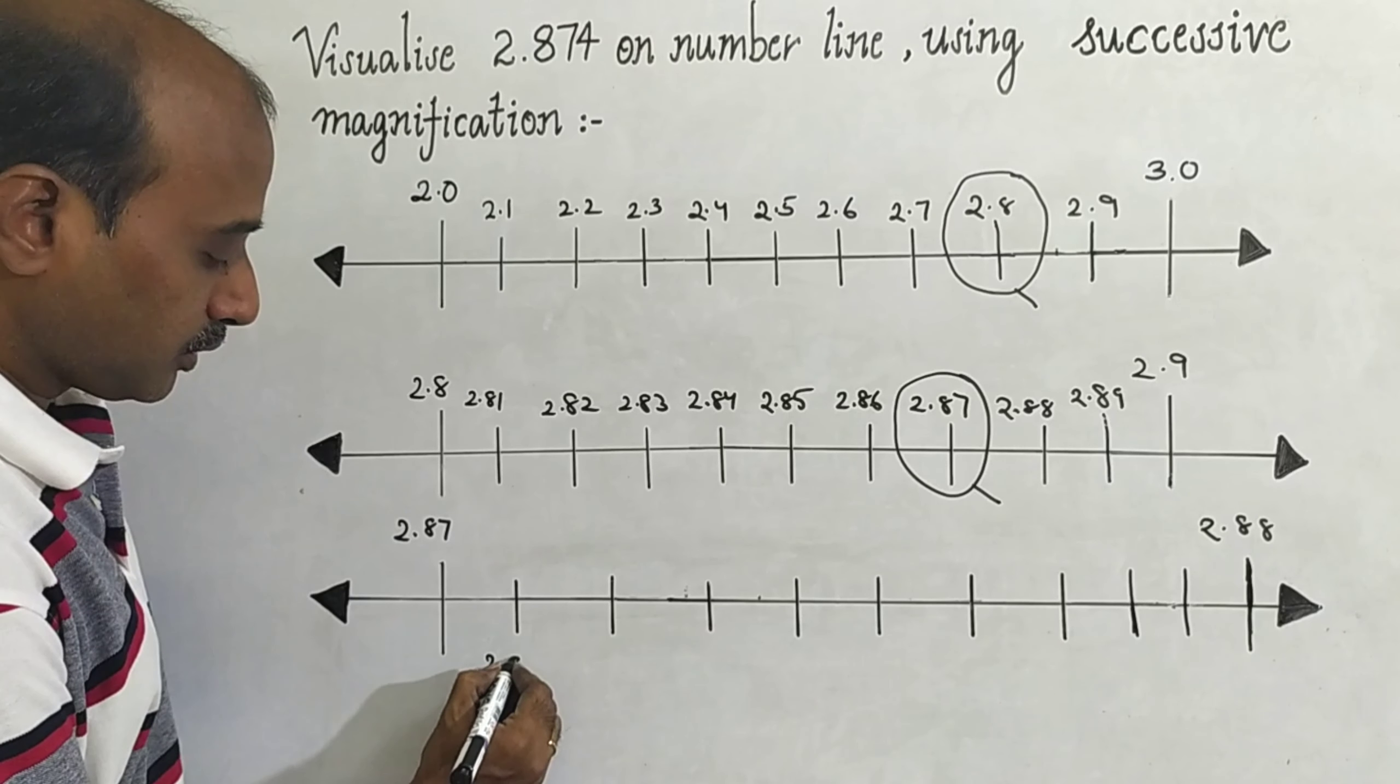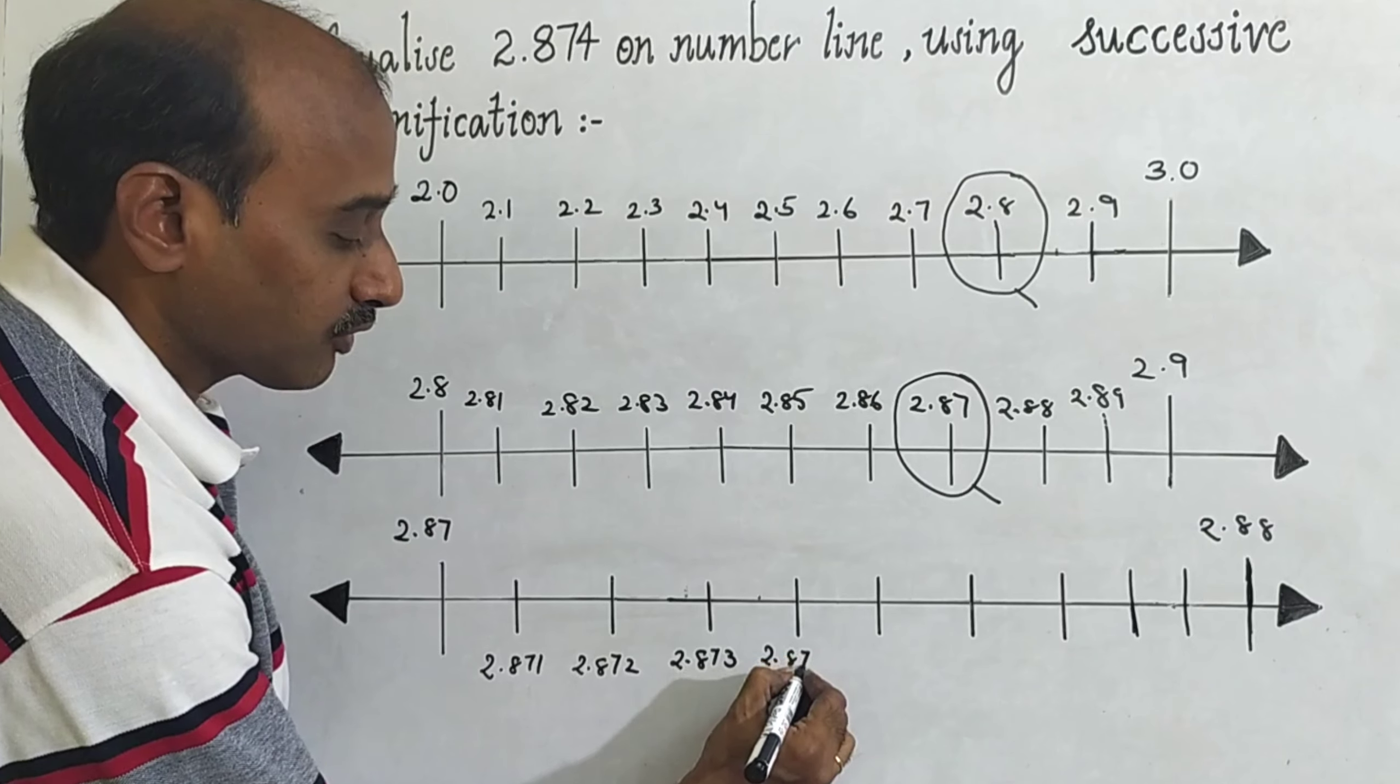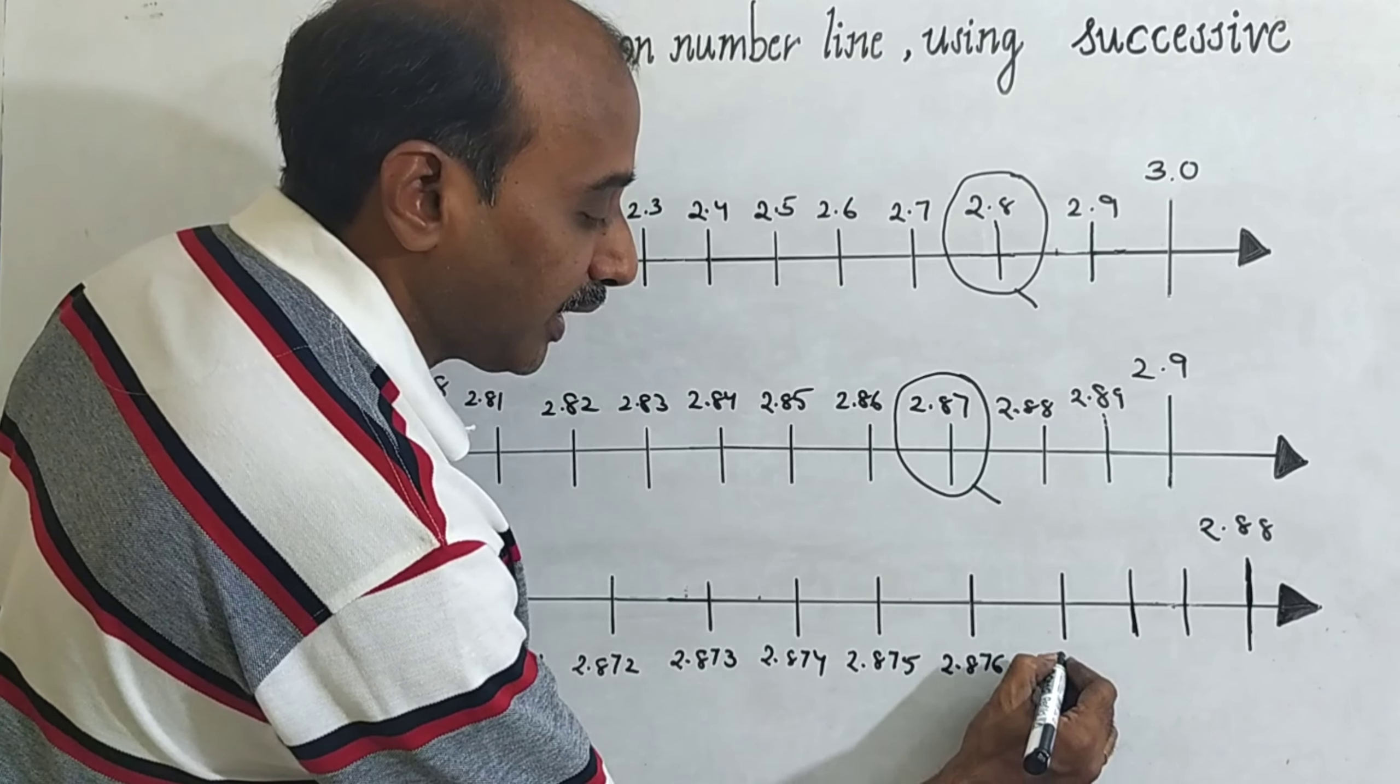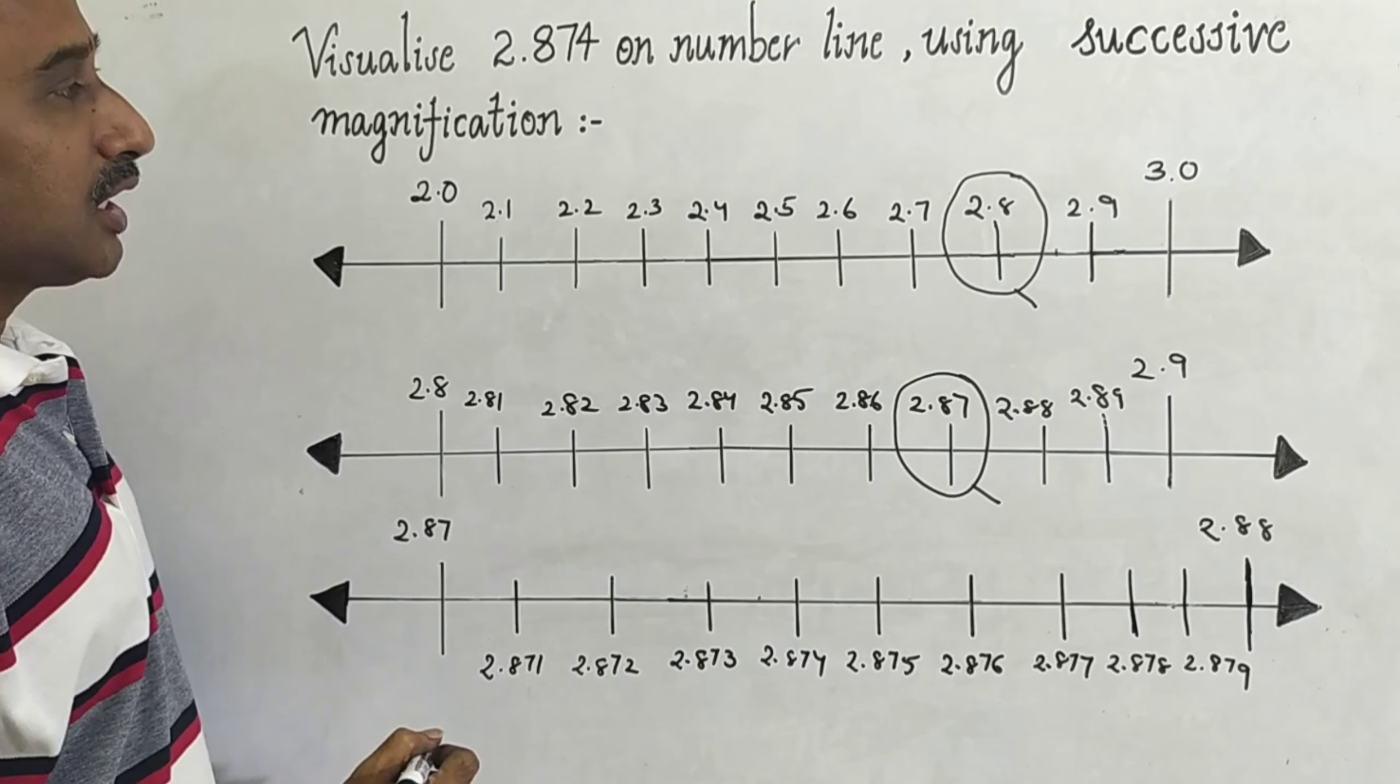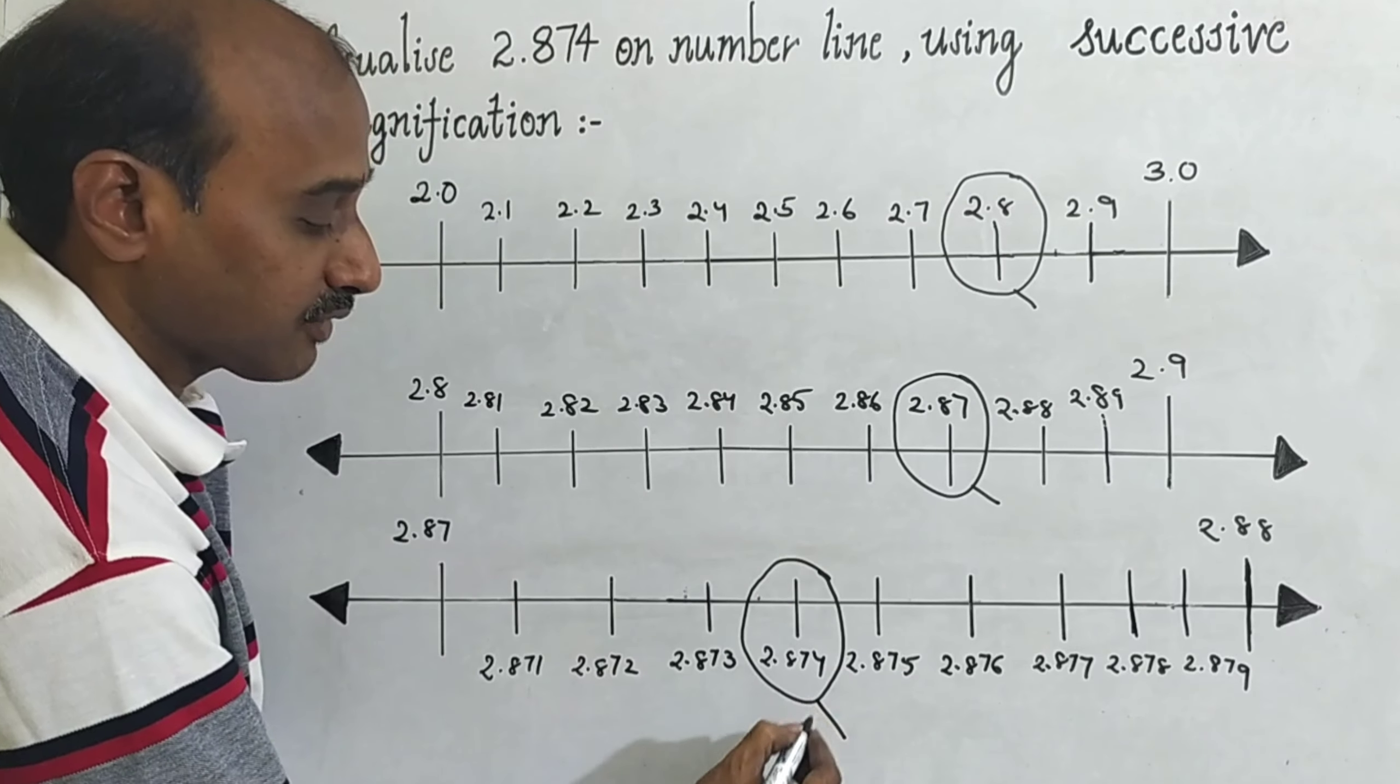Each part you can write 2.871, 2.872, 2.873, 2.874, 2.875, 2.876, 2.877, 2.878, 2.879, this is 2.88. Now you can see our decimal is 2.874, here this is, you can magnify it, 2.874.